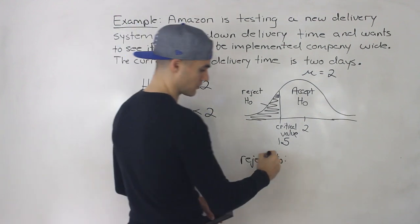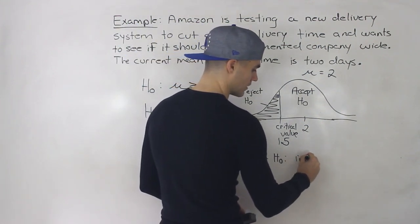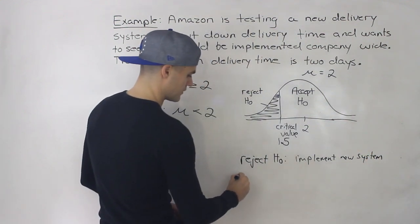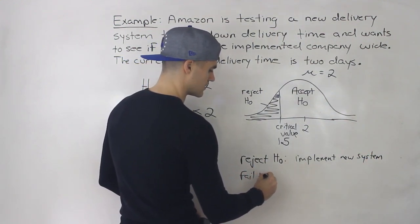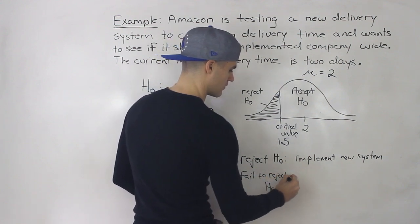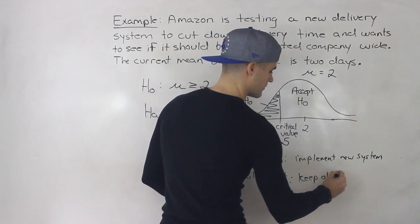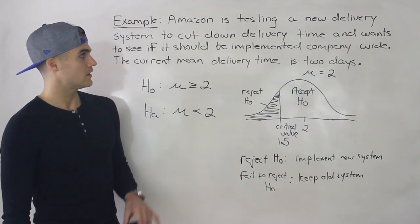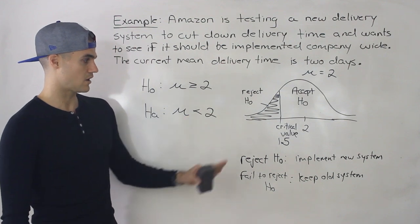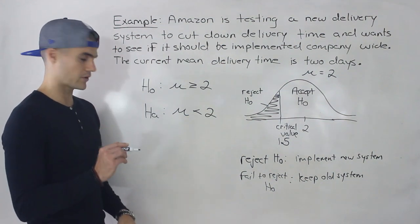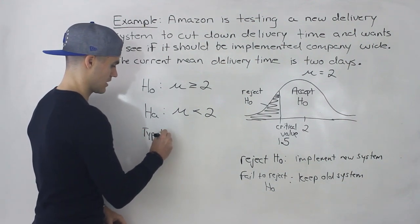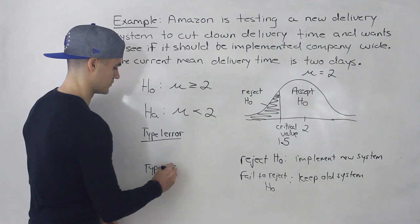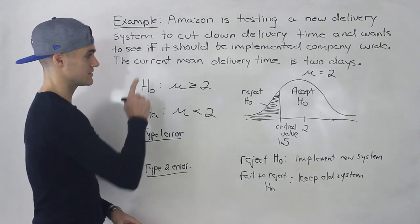So the conclusion in this word problem, if we reject the null, is that we implement the new system. But if we fail to reject the null, then it means we keep the old system, because we don't have enough evidence that the delivery time is being cut down. This is an example of a left-tailed test.